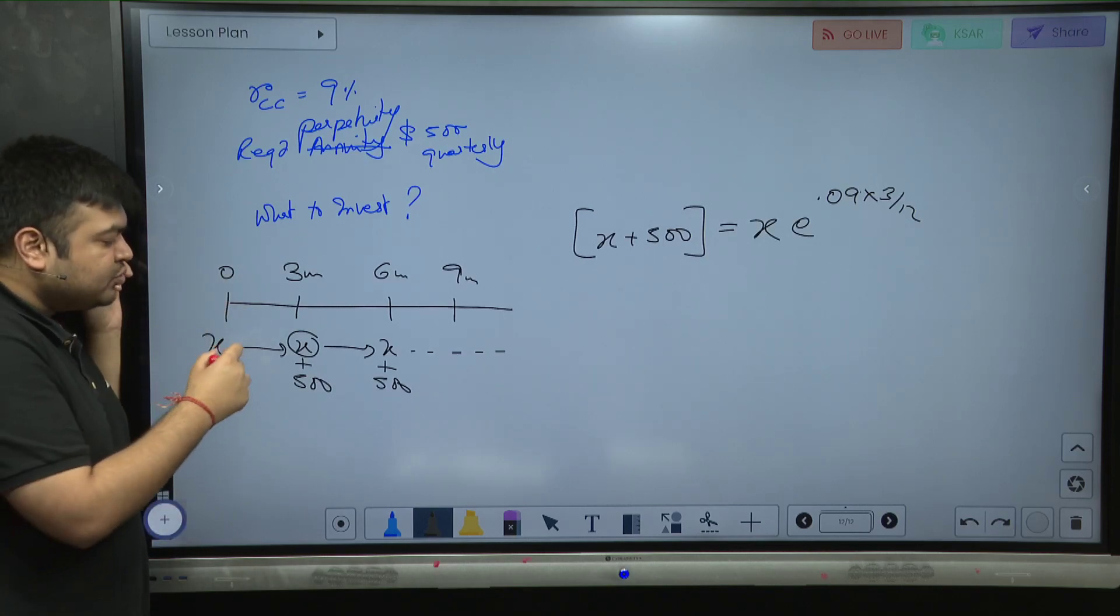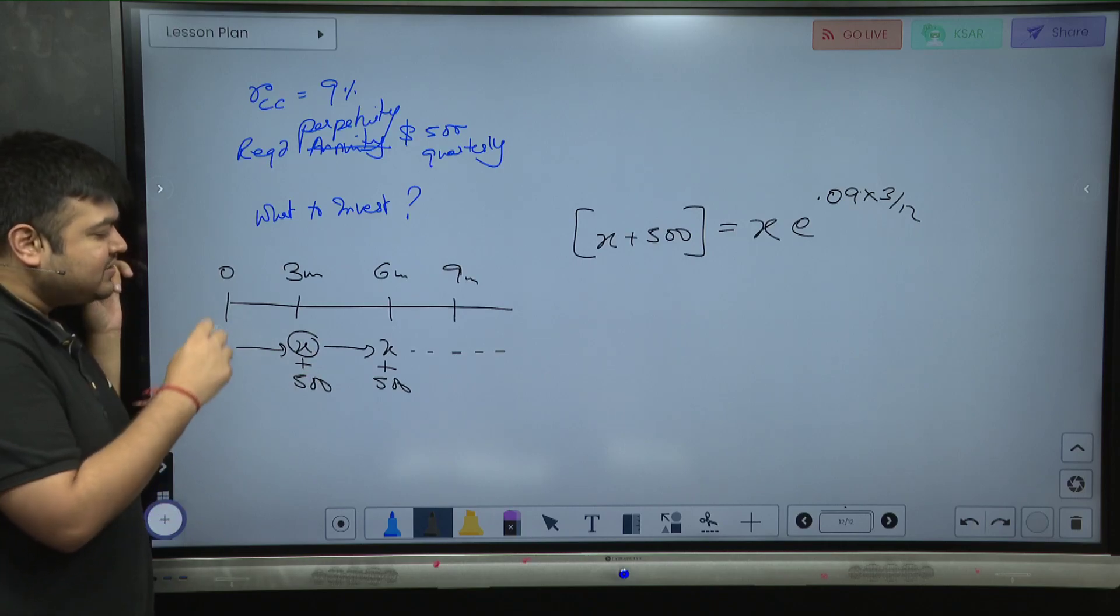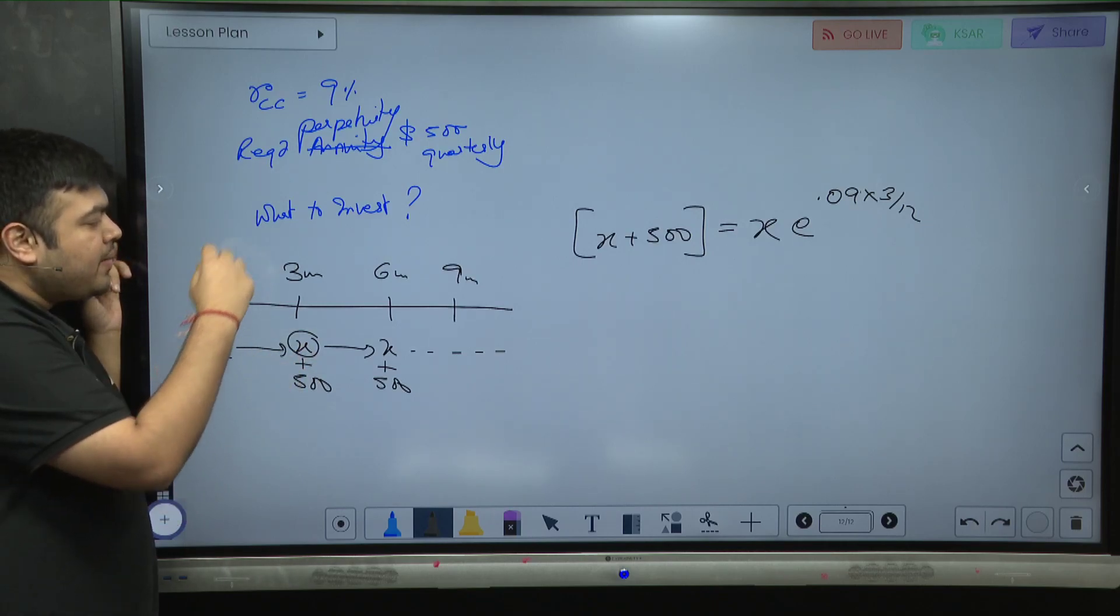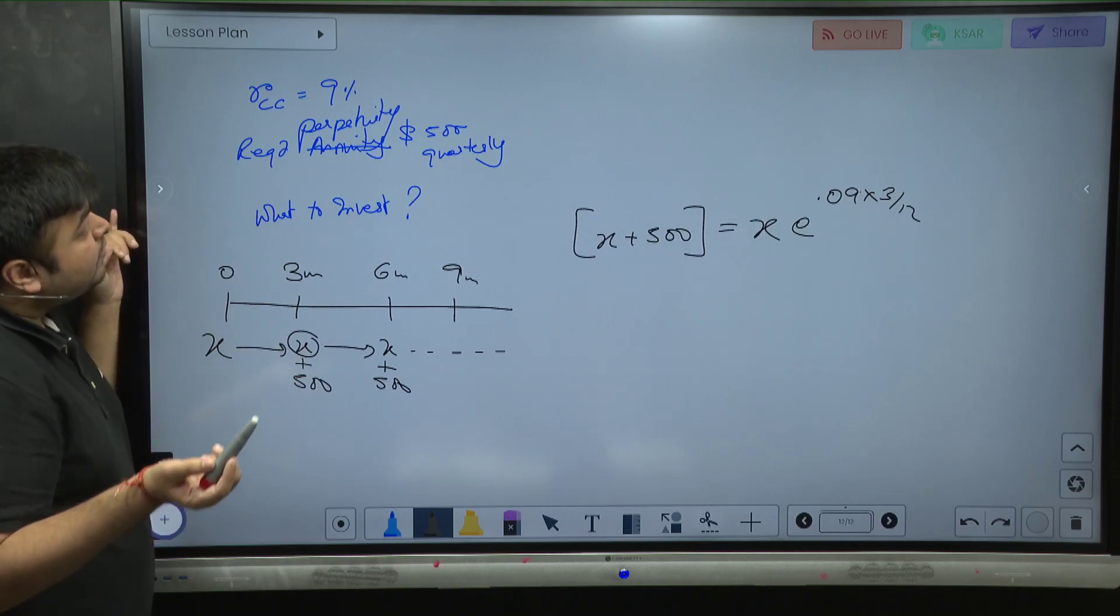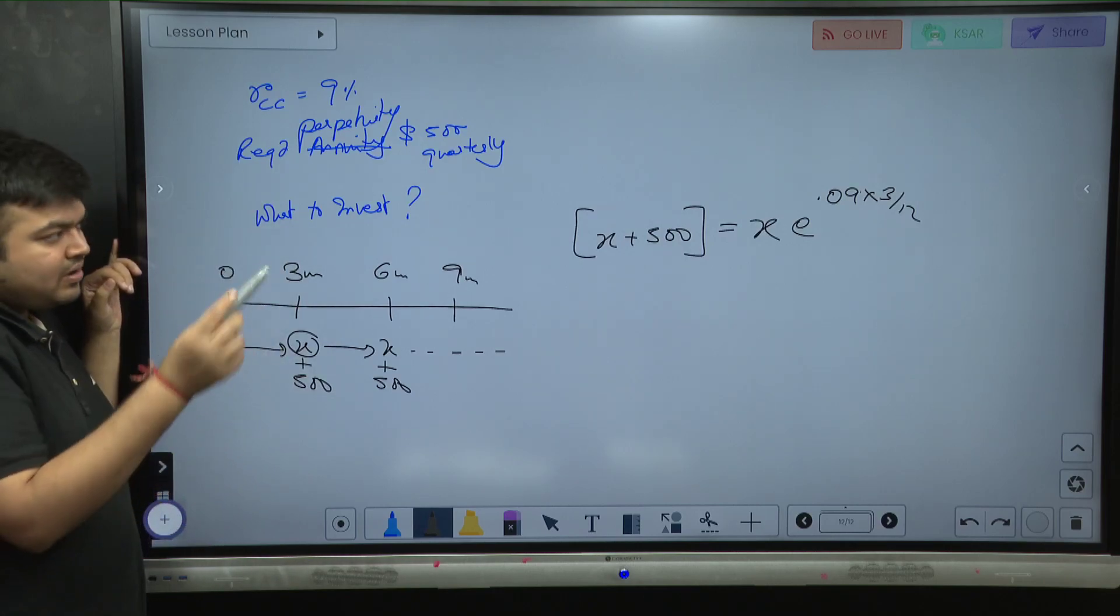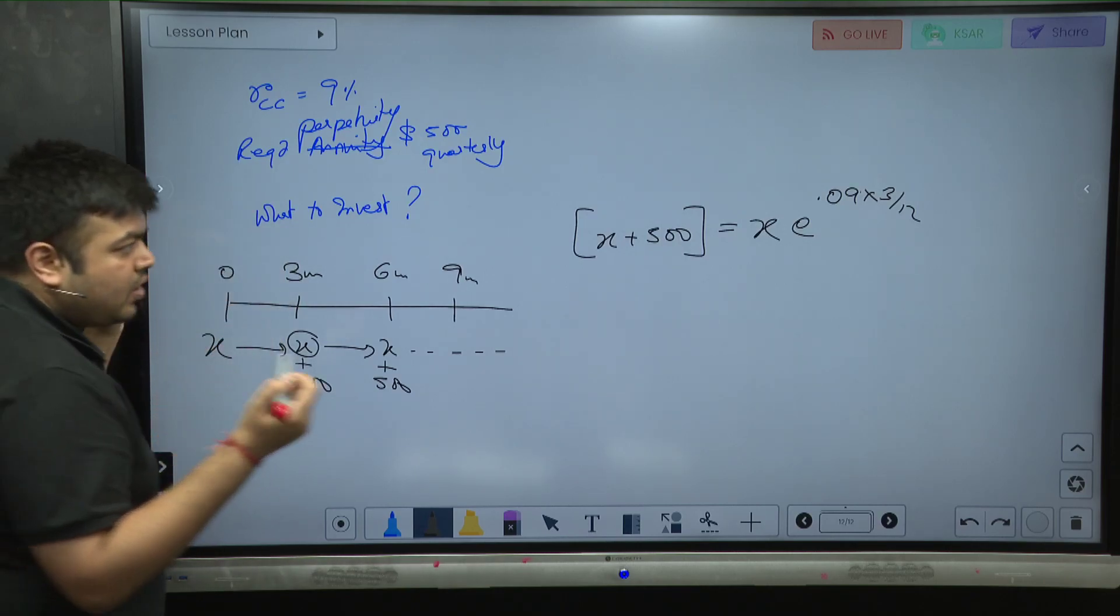The future value is x plus 500, present value is x. So x into e to the power 0.09 into 3 by 12 is equal to x plus 500. Now all I have to do is solve this.